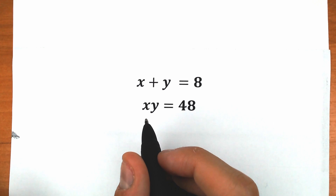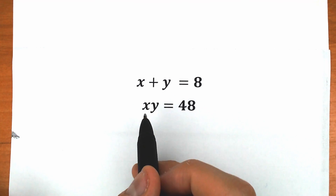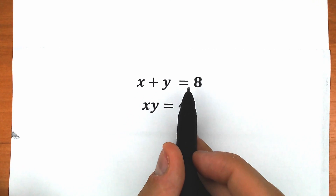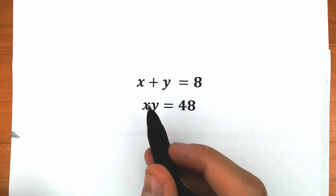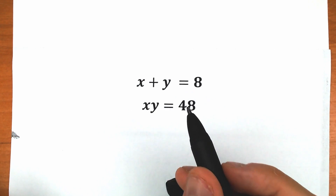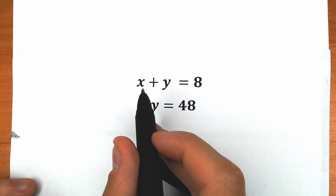Hello everyone, happy to see you here on my channel. I'm Mathematics, and today we have a really interesting challenge. x plus y equals 8, x times y equals 48, and we need to find x and y. Let's do this.